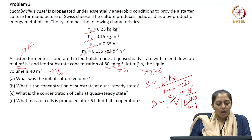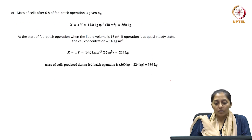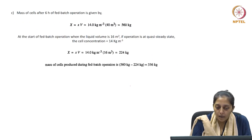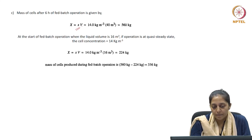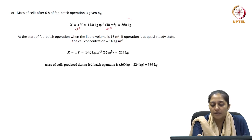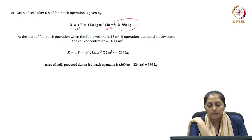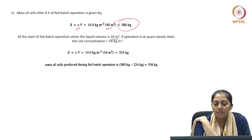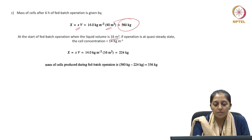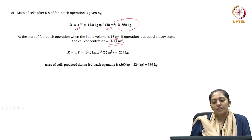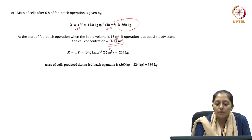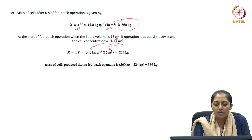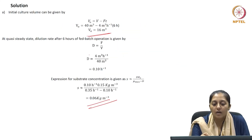The fourth part asks: what mass of cells is produced after 6 hours of fed batch operation? We need to find the amount of cells. Knowing the steady state biomass concentration and the final volume of 40 m³, we can determine the total biomass at quasi steady state after 6 hours: 14 kg/m³ times 40 m³ equals 560 kg. At the start of operation, when liquid volume was 16 m³, and since operation is at quasi steady state, cell concentration was already 14 kg per meter cube.